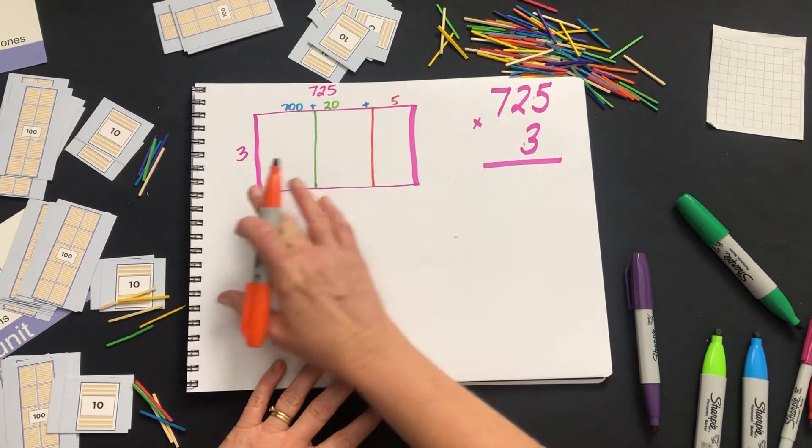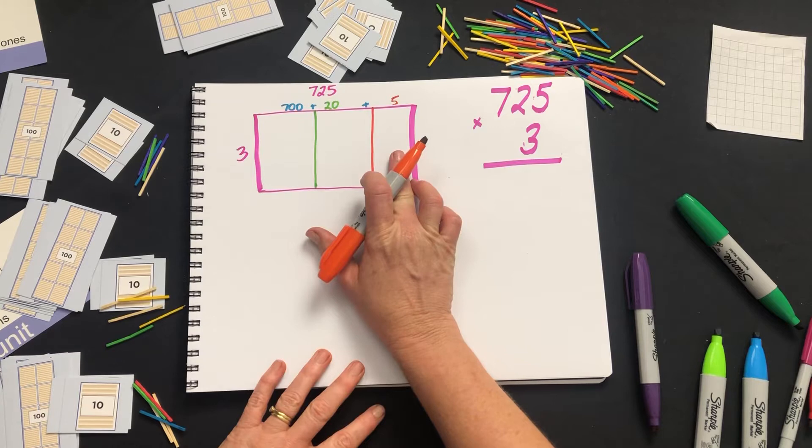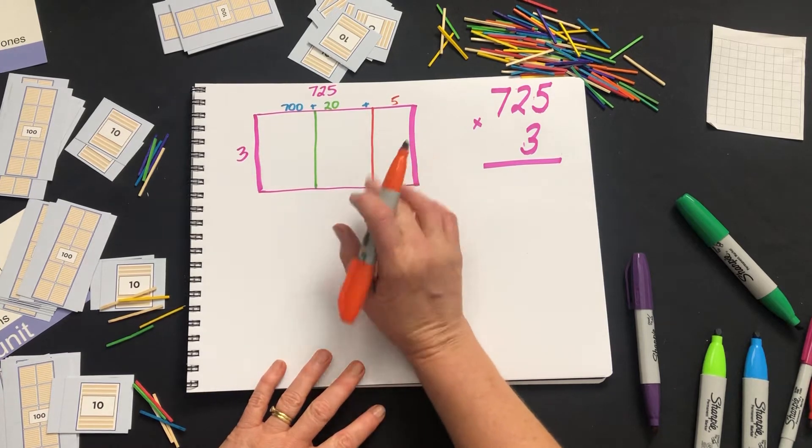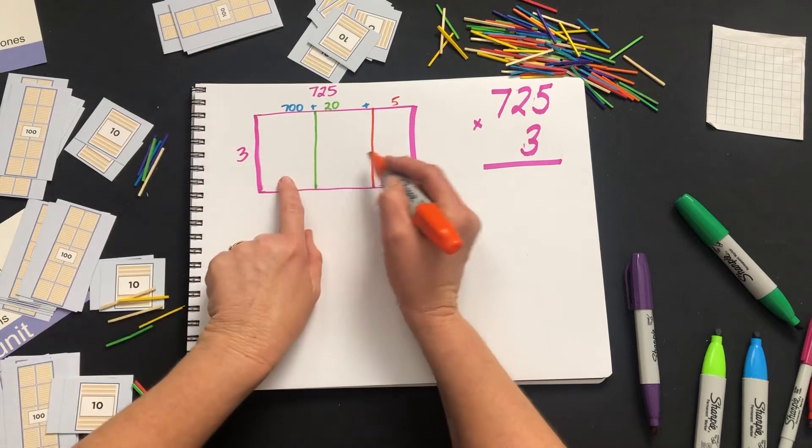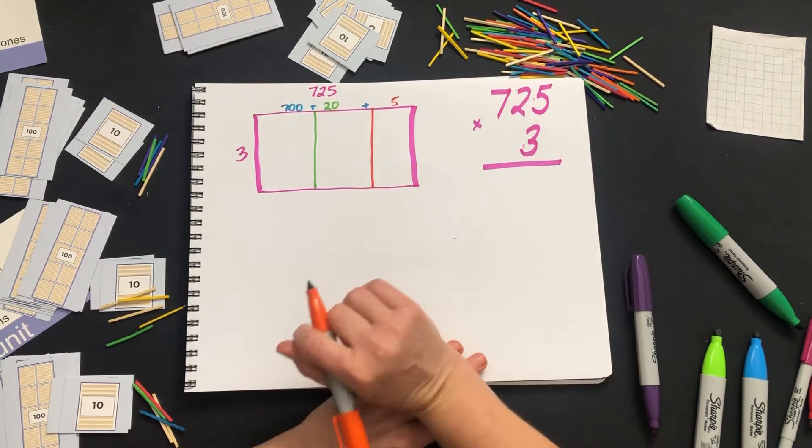So now we have three rectangles, or three sums that we can do to give us our big rectangle, and we add each of these rectangles together to get the solution.